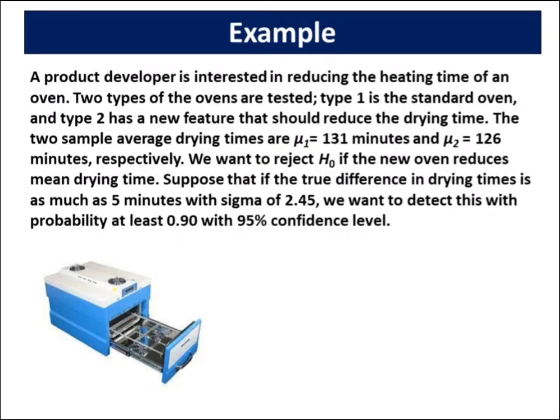Let us take an example. A product developer is interested in reducing the heating time of an oven. Two types of ovens are tested: type 1 is the standard oven, and type 2 has a new feature that should reduce the drying time. The two sample average drying times are mu equals 131 minutes and mu equals 126 minutes, respectively. We want to reject the null hypothesis if the new oven reduces mean drying time. Suppose the true difference in drying times is as much as 5 minutes with sigma of 2.45, and we want to detect this with probability at least 0.90 with a 95% confidence level.